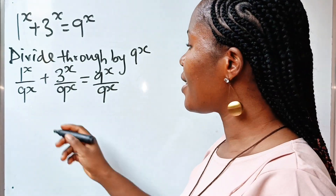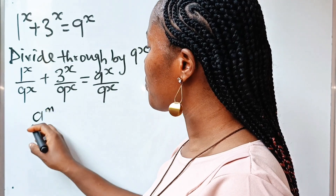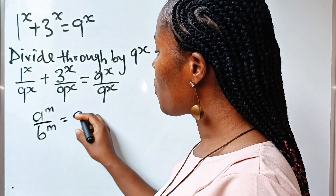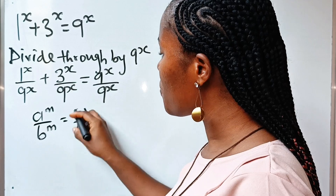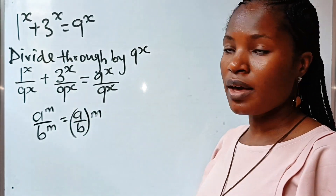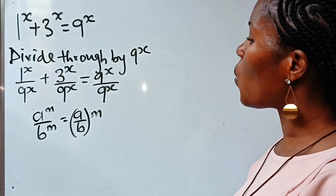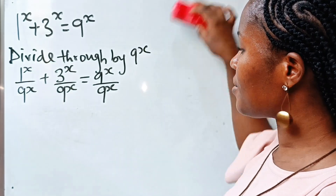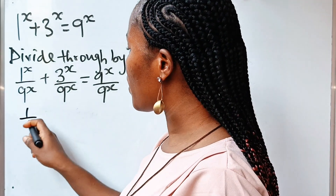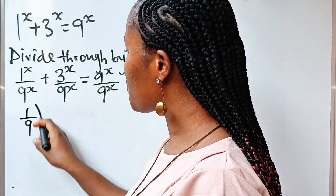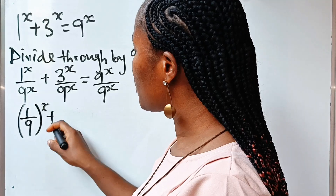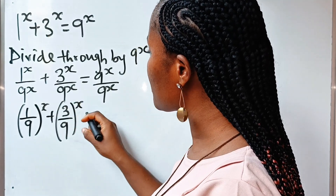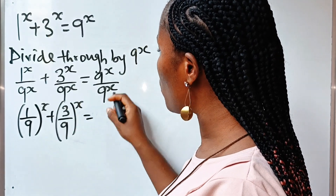Now, remember that a to the power of m divided by b to the power of m is equal to a over b raised to the power of m. So that means we can write this as 1 over 9 raised to the power of x, plus 3 over 9 raised to the power of x, is equal to 1.